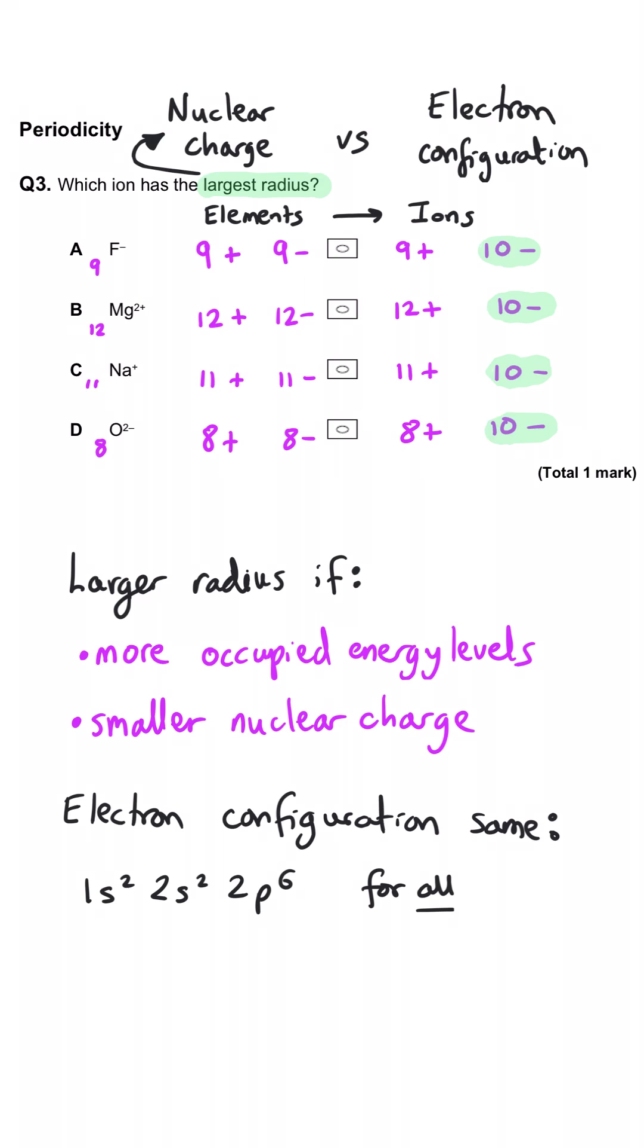So the size of the ion is all down to the nuclear charge. The one with the largest radius will have the smallest nuclear charge, which is oxide. It's only got eight protons. So D is correct.